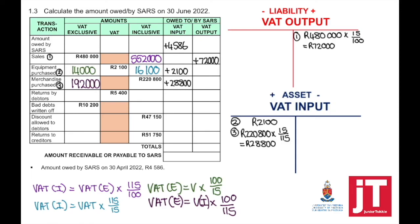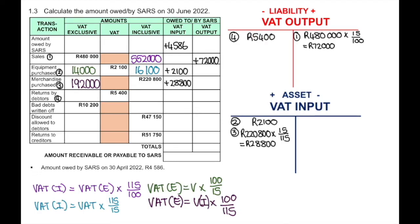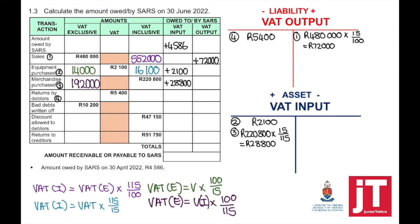Returns by debtors: when we're selling goods on credit, invoice-based means we must pay that money over to SARS. But when those items are returned by the debtors, we no longer owe that money to SARS. This is why VAT output will now be debited — minus R5,400. To calculate the VAT excluding, if the VAT amount is given, take times 100 divided by 15. To calculate the VAT inclusive, take the VAT amount times 115 divided by 15, or VAT amount plus VAT exclusive equals VAT inclusive.